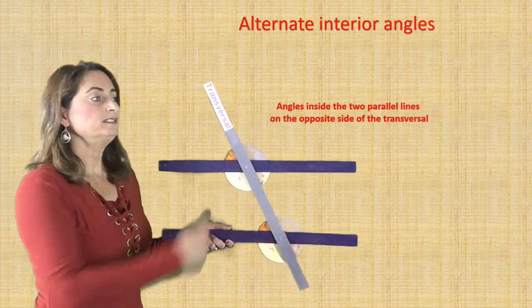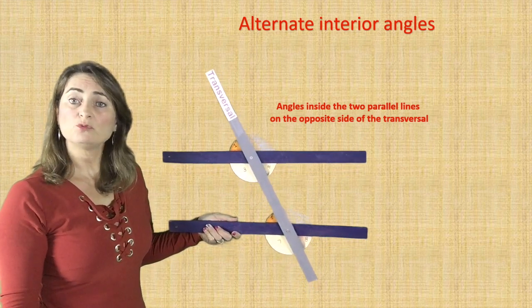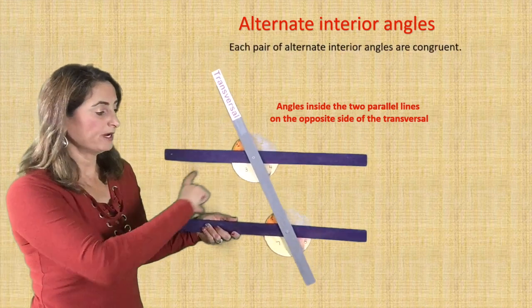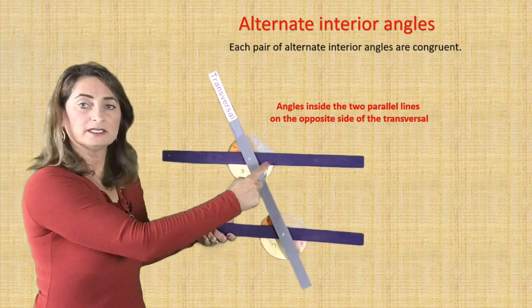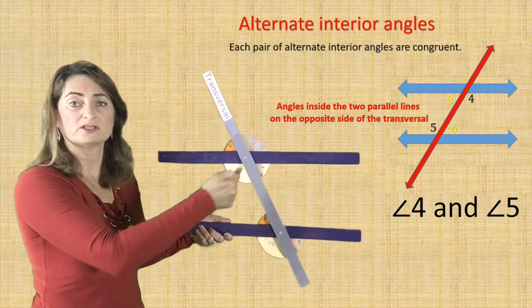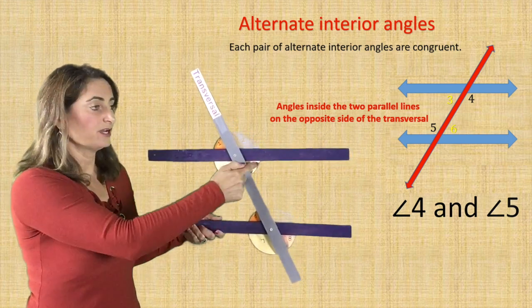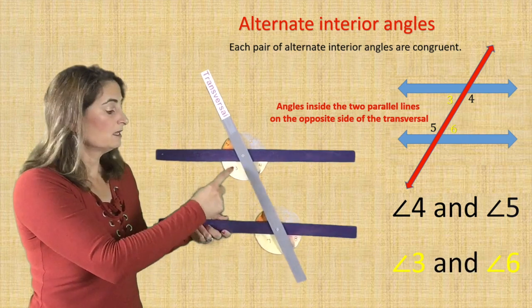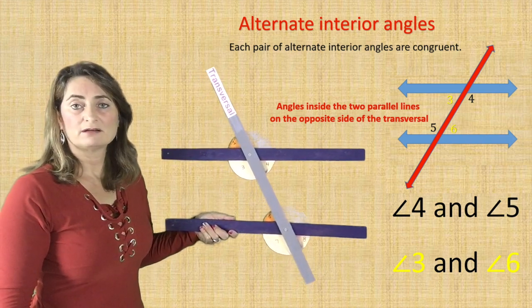Now alternate interior angles. Each pair of alternate interior angles are also congruent. From the word 'alternate interior,' they are inside the two parallel lines — so angles three, four, five, and six are interior angles. When we say 'alternate,' they are on the opposite side of the transversal. So stay inside the two parallel lines on the opposite side of the transversal. Angles four and five are alternate interior angles and they are congruent. Angles three and six are alternate interior angles and they are congruent.